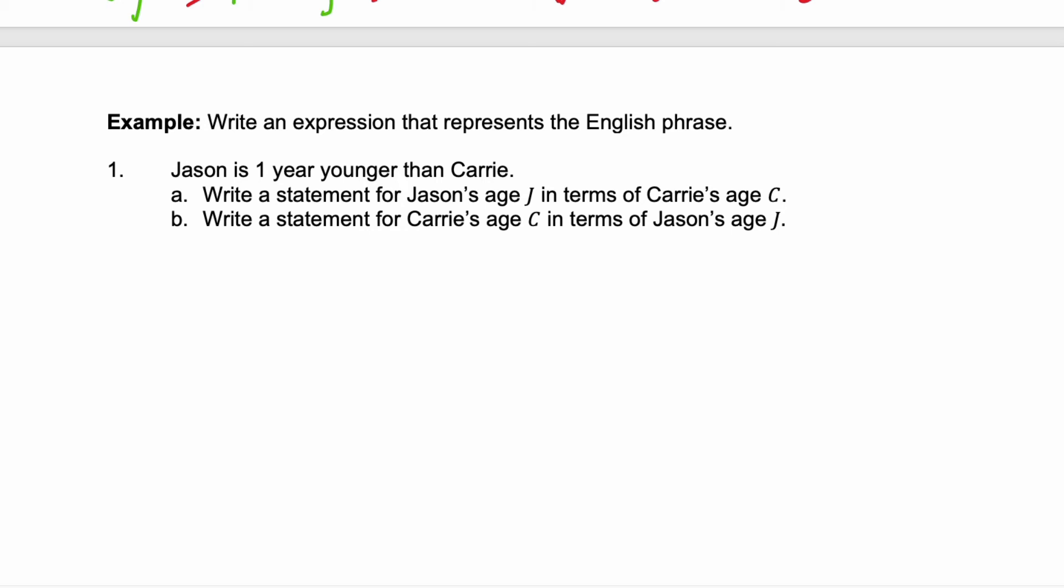The English phrase we're given is Jason is one year younger than Carrie. In part A, we're going to write a statement for Jason's age J in terms of Carrie's age C. Well, Jason J is, translates to equals, and then we have one year younger than Carrie. Well, that would tell us take Carrie's age and subtract 1.